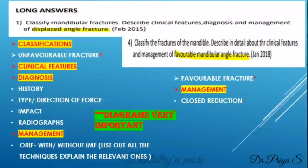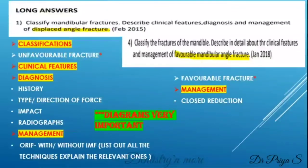There are two questions on classification of mandibular fractures and description of the clinical features, diagnosis, and management of angle fractures. The difference is that the first question asks about a displaced or unfavorable angle fracture, and the second question is on a favorable mandibular angle fracture. There are a number of classifications given in textbooks — you can mention just one. Then explain what an unfavorable or favorable fracture is depending on the question, and diagrammatically represent the favorability of fracture horizontally and vertically.